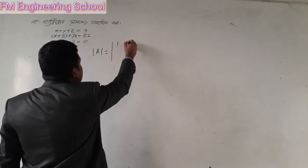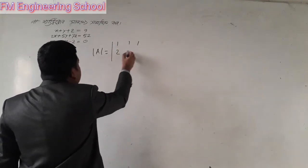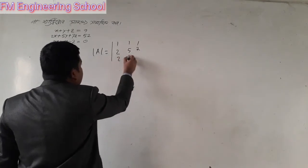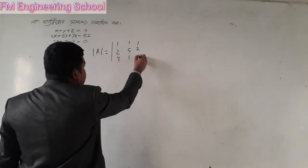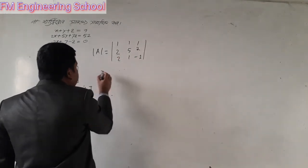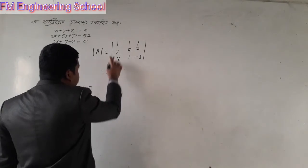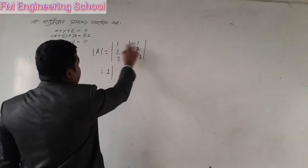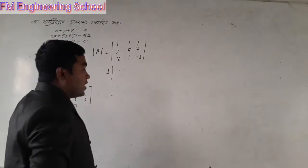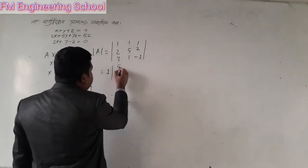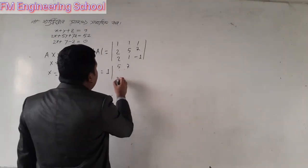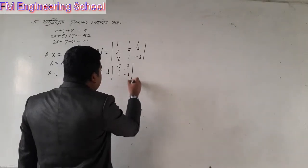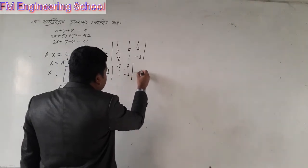1, 1, 1, 2, 5, 7, 2, 1, minus 1. So we have a here. 1, 1, 4, 5, 5, 5, 6, 7, and 1, minus 1. This is minus 1.